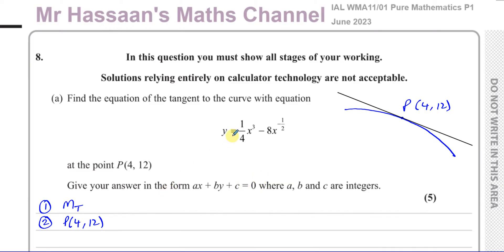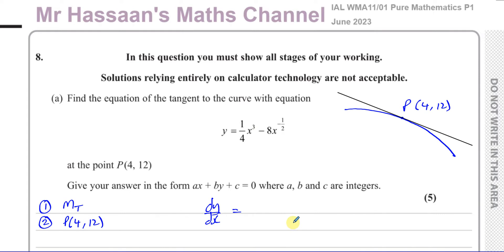So we need to find the gradient of the curve at P. The gradient function is found by differentiating the original function. We need to find dy/dx. This is already ready to differentiate — we don't have to do anything to prepare it, because everything is in index form with the x terms on the numerator.